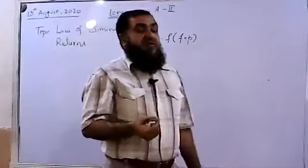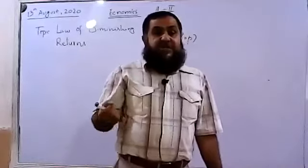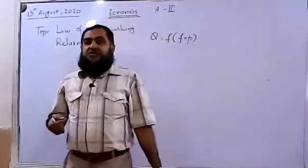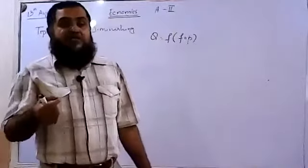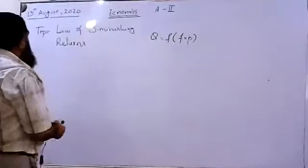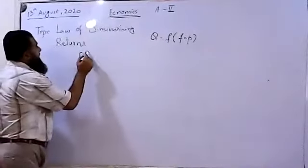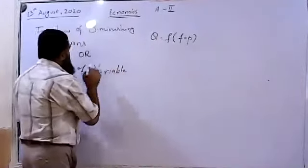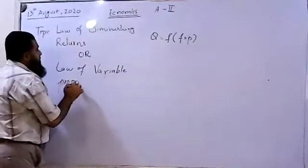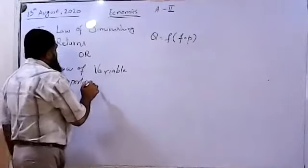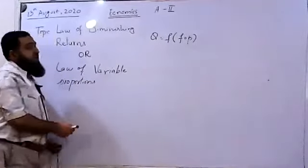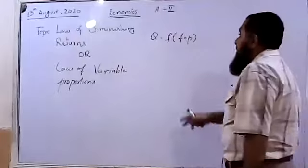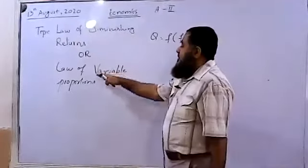When we are adding the variable factor of production into the fixed factor, a time will come when some workers' per-worker output will also be declining. This law of diminishing returns is also given another name: the law of variable proportions — referring to how proportionately the variable factor of production is going to be changed. Sometimes in our MCQs, this law of diminishing returns is given as the law of variable proportions, so we should know that these are two names for the same law.